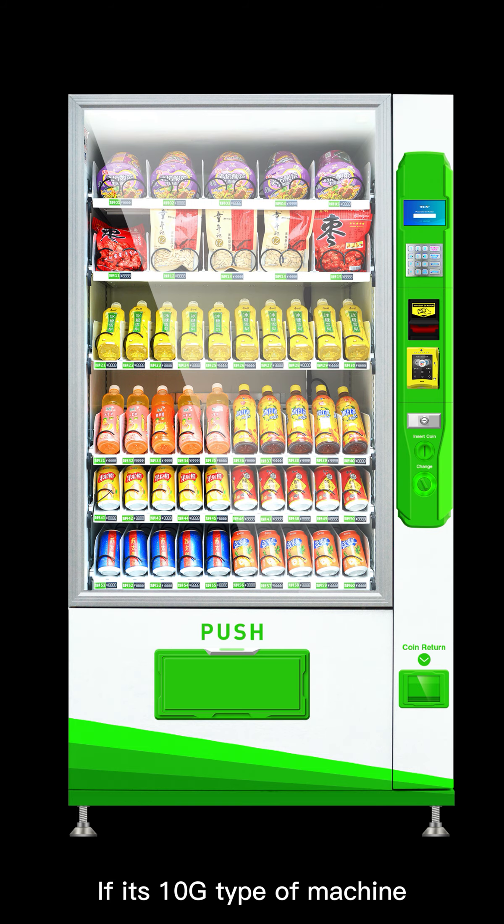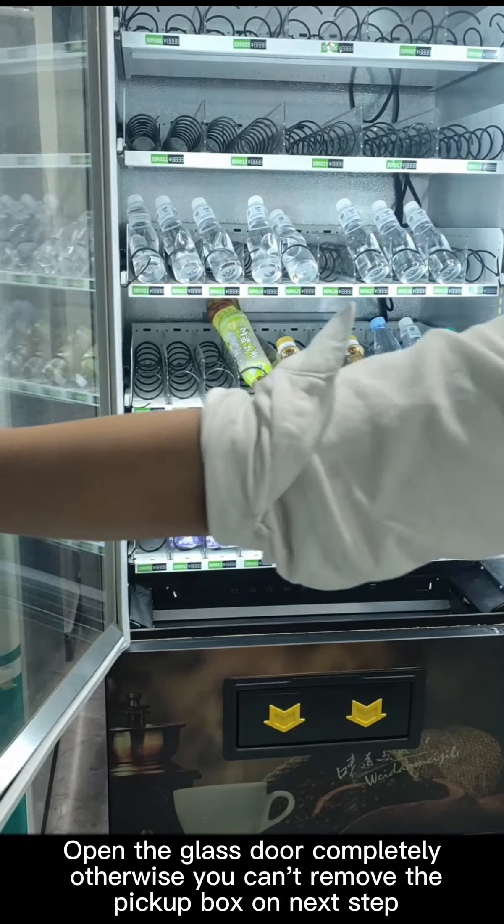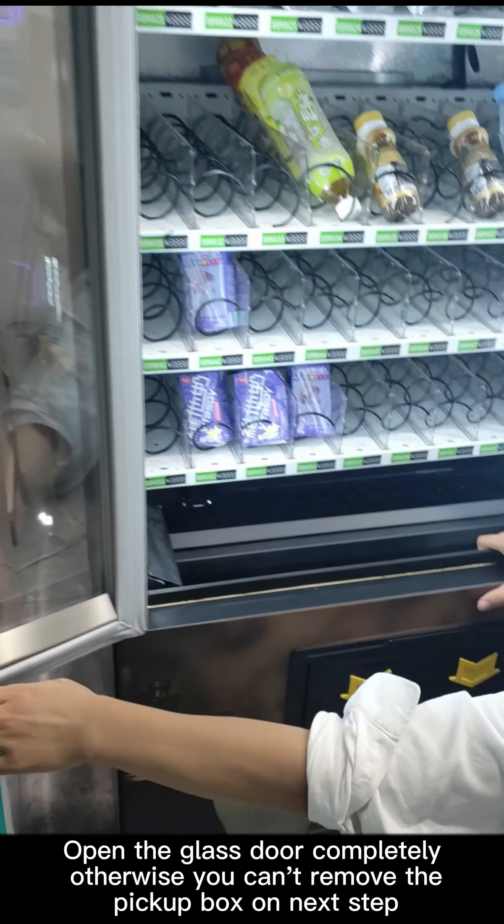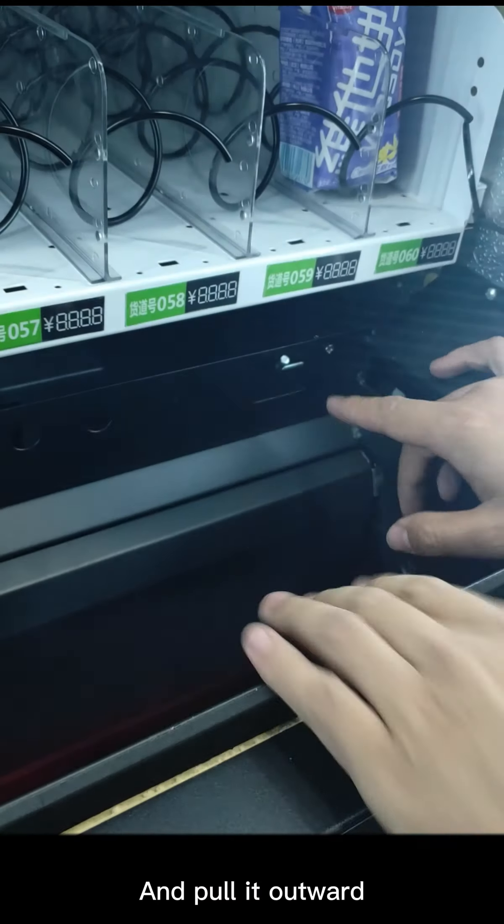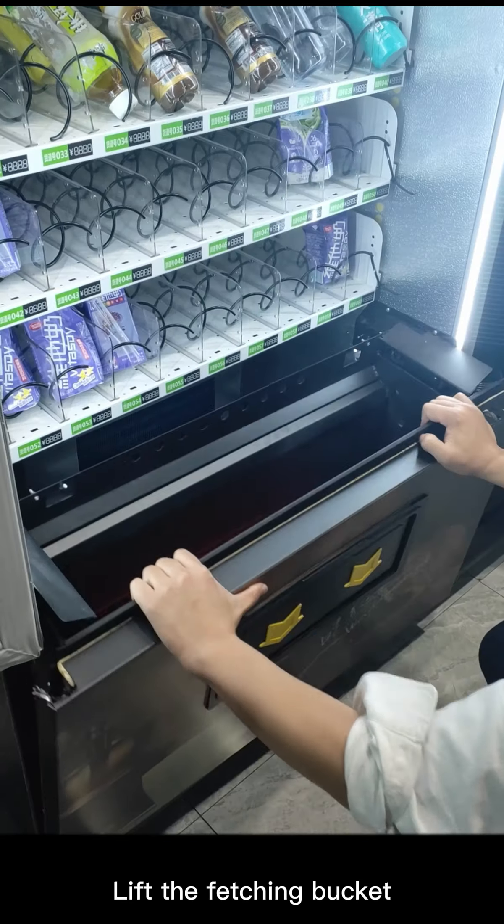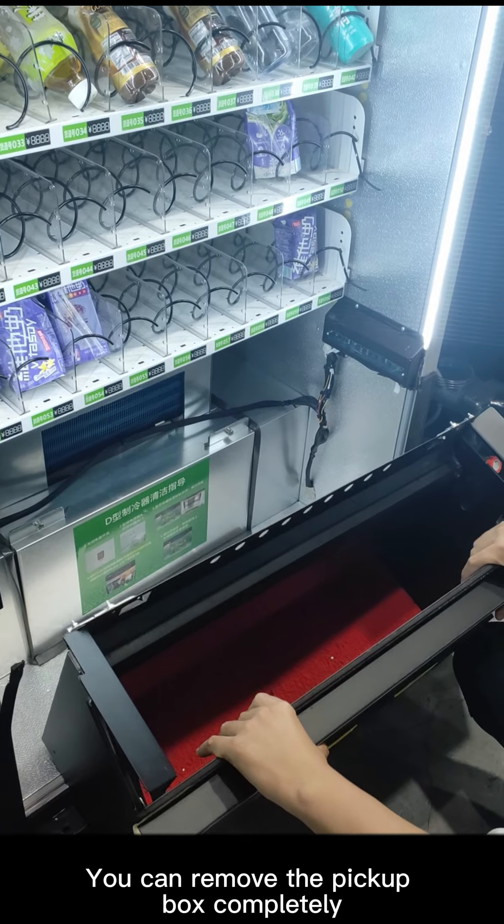If it's a 10G type of machine, please follow the steps below. First, open the glass door completely, otherwise you can't remove the pickup box on the next step. Find the two locks of the pickup box, pull it up and pull it outward. Lift the fetching bucket, and you can remove the pickup box completely.